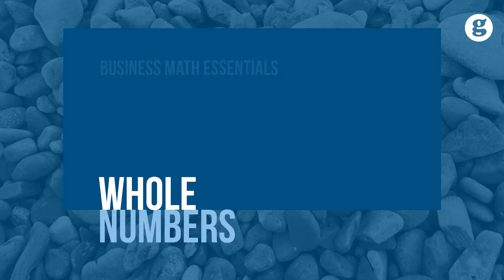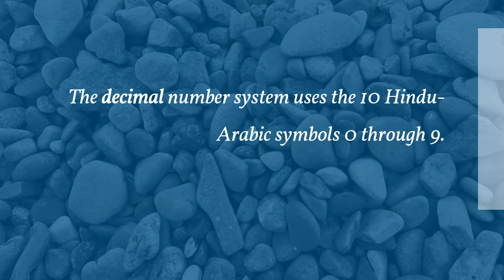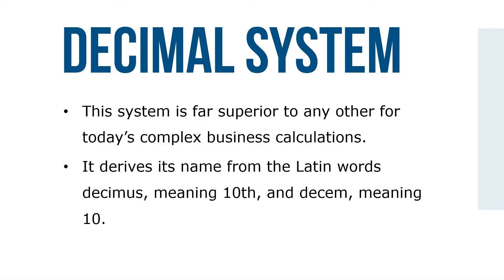The number system most widely used in the world today is known as the Hindu-Arabic numerical system, or decimal number system. The decimal number system uses the 10 Hindu-Arabic symbols 0 through 9. In this place value system, the position of a digit to the left or right of the decimal point affects its value. This system is far superior to any other for today's complex business calculations. It derives its name from the Latin word decimus, meaning tenth, and decim, meaning ten.